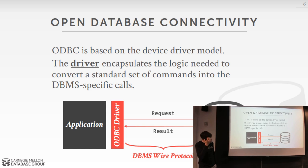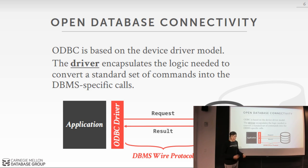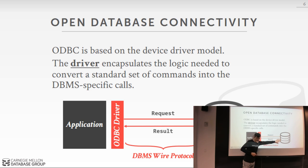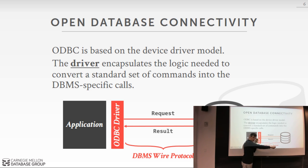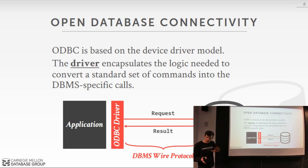One thing you can do with an ODBC driver is have it emulate certain features that your database system may not actually support. For example, cursors — where instead of getting back all results at once you get an iterator with get-next calls. If your database doesn't support cursors, the driver can just send the request, get back all results, hold them in memory, and pretend it has a real cursor. This is all hidden from the application and handled inside the ODBC driver.